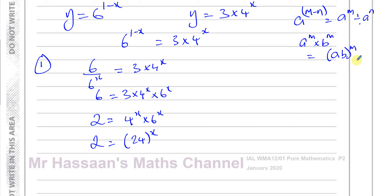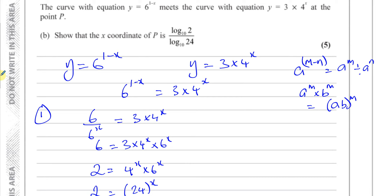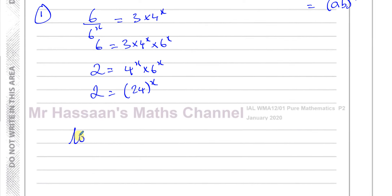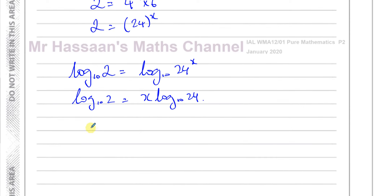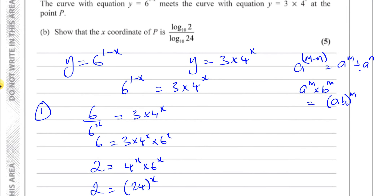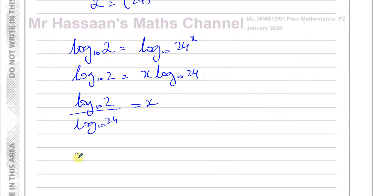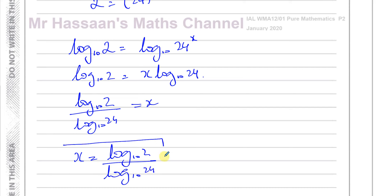Multiplying both sides by 6 to the power of x removes the fraction, giving 6 equals 3 times 4 to the power of x times 6 to the power of x. Dividing both sides by 3 gives 2 equals 4 to the power of x times 6 to the power of x. Using the law that a to the power of m times b to the power of m equals (ab) to the power of m, this becomes 2 equals 24 to the power of x. Taking log base 10 of both sides: log base 10 of 2 equals x times log base 10 of 24, so x equals log base 10 of 2 over log base 10 of 24.